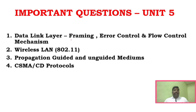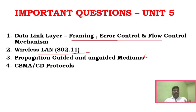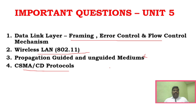For Unit 5, the data link layer topics are important: framing, error control, and flow control mechanisms. Wireless LAN and different types of propagation — cable and wireless links — are relatively easy to learn. CSMA/CD and CSMA/CA protocols are also key. In this subject, there are about four questions per unit except Unit 1. The questions are approachable if you build the concepts properly rather than just aiming to pass.